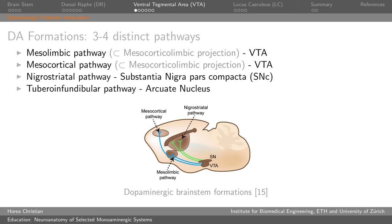Now looking at the dopaminergic system, the first thing you'd notice is that its projections from the midbrain are much more focal than those of the serotonergic system. They can be broken into several pathways. The mesolimbic pathway goes from the midbrain — meso — to the limbic system, starting from the VTA. The mesocortical pathway goes from the midbrain to the cortex. The nigrostriatal pathway comes from the substantia nigra and projects into the striatum — specifically the dorsal striatum, since the ventral striatum is projected to by the mesolimbic pathway.